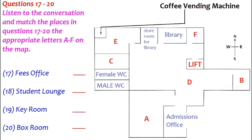My luggage was sent on ahead — do you know where I should collect it? The box room is next to the women's toilet. You'll have to get the key from the key room. Thank you. That is the end of part two.